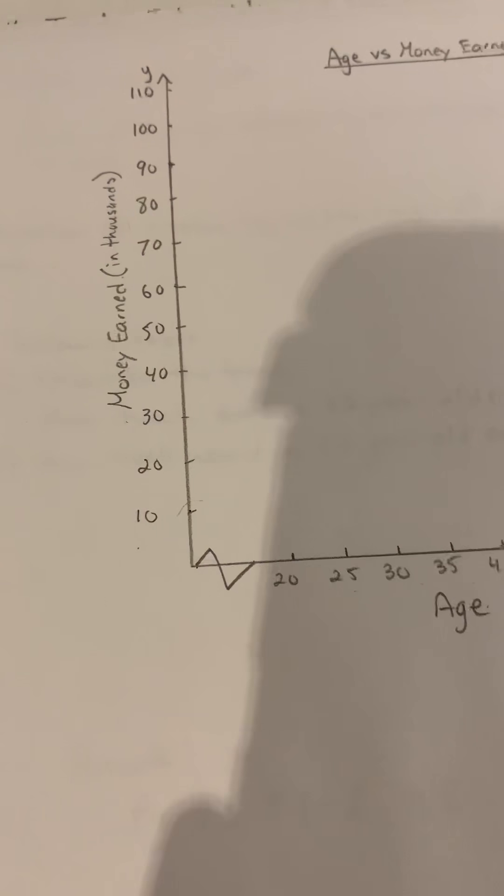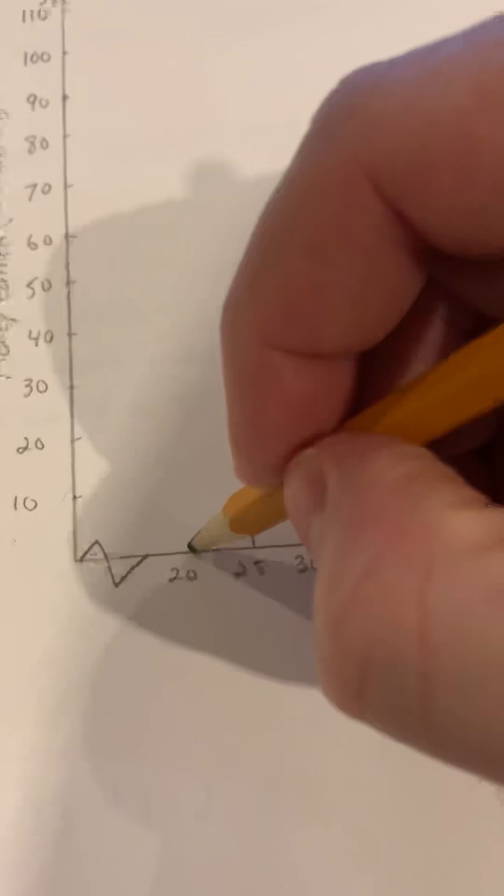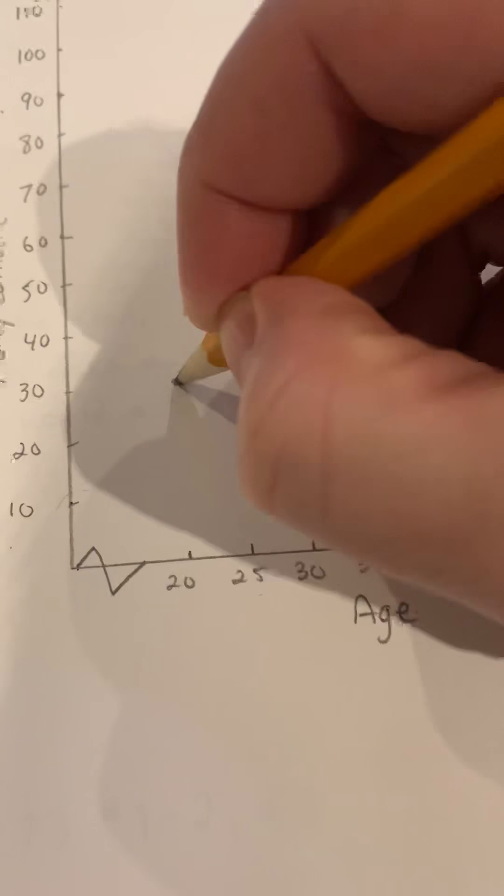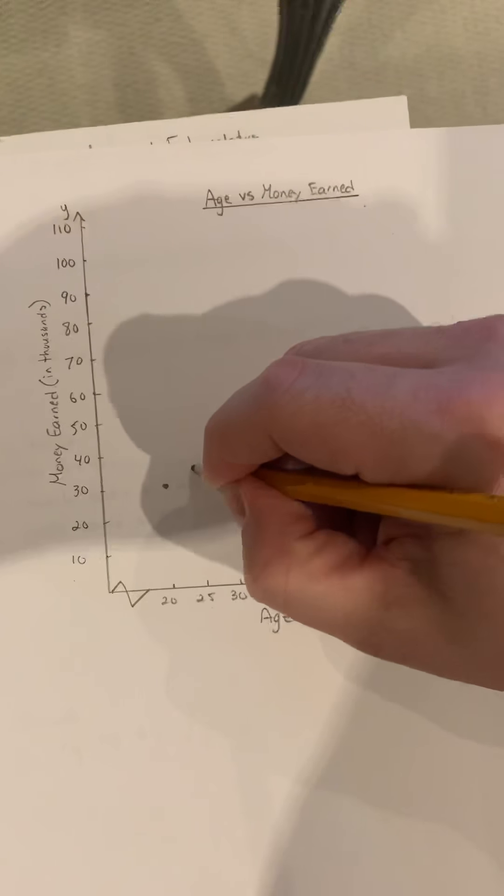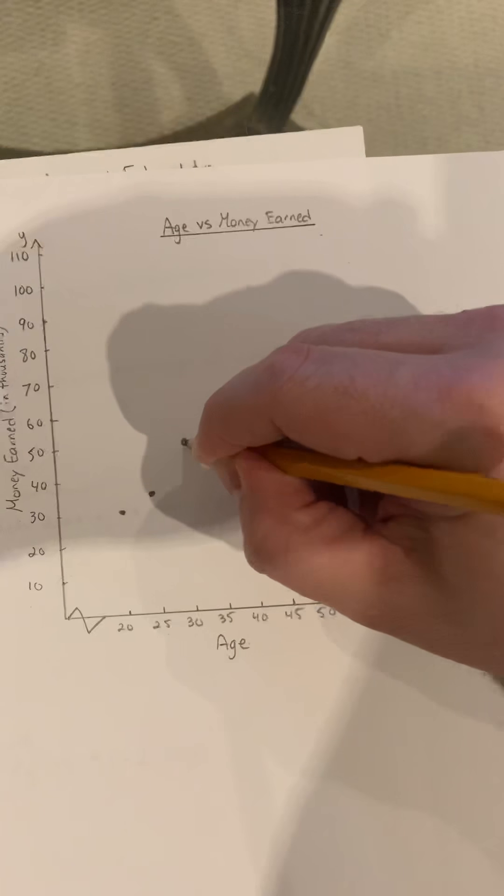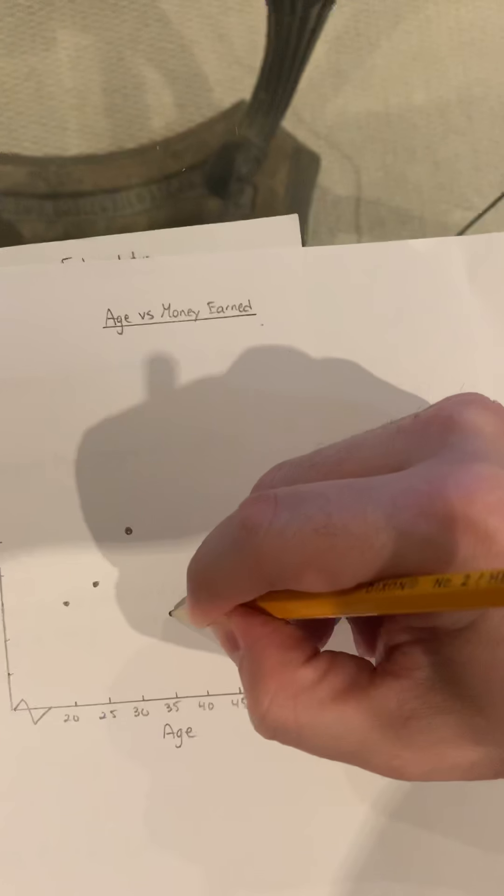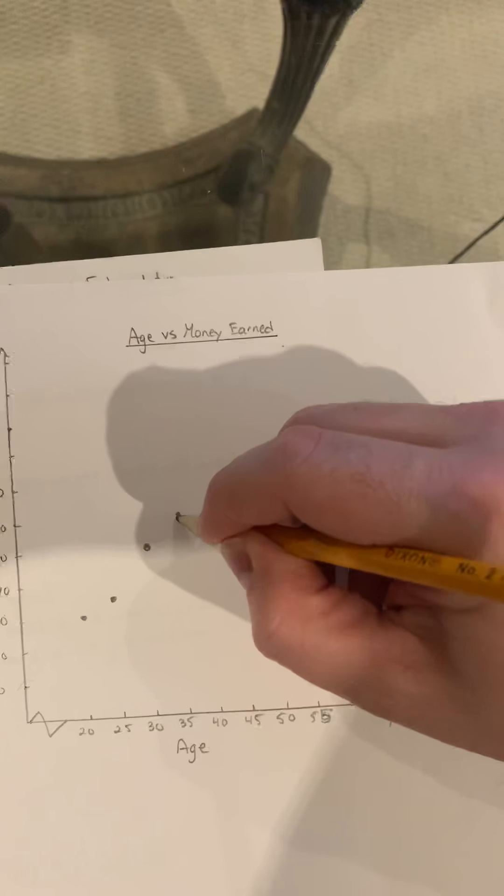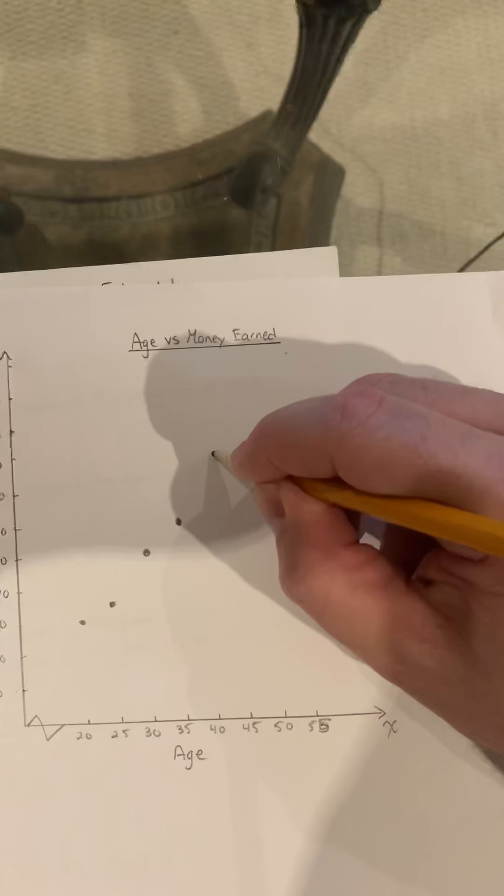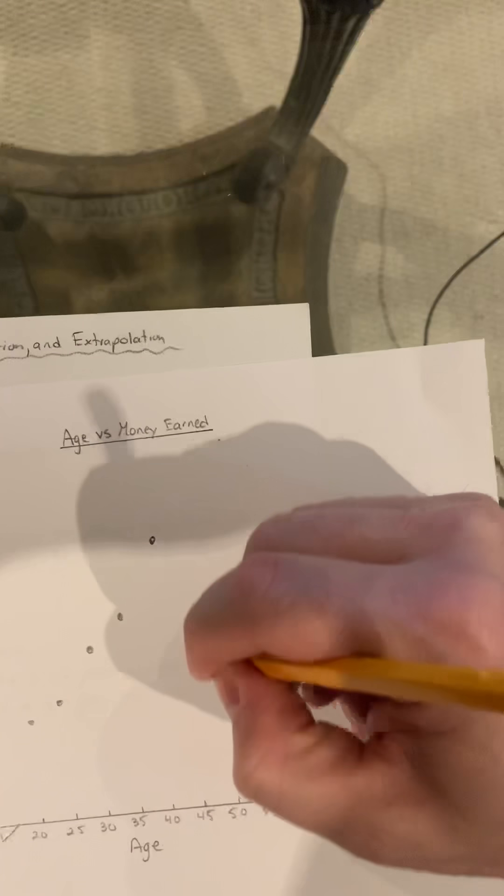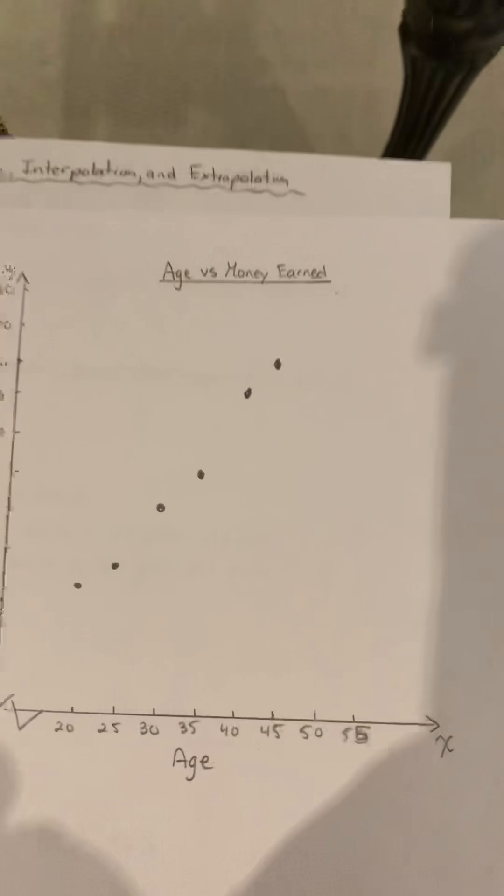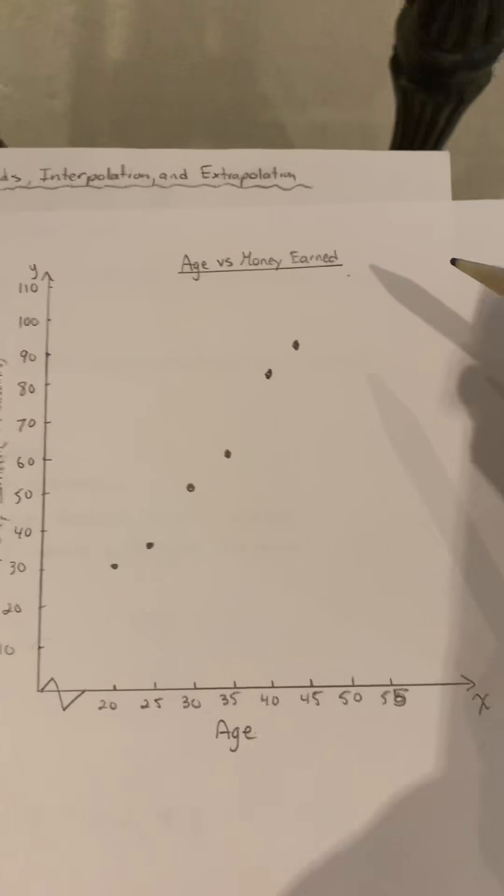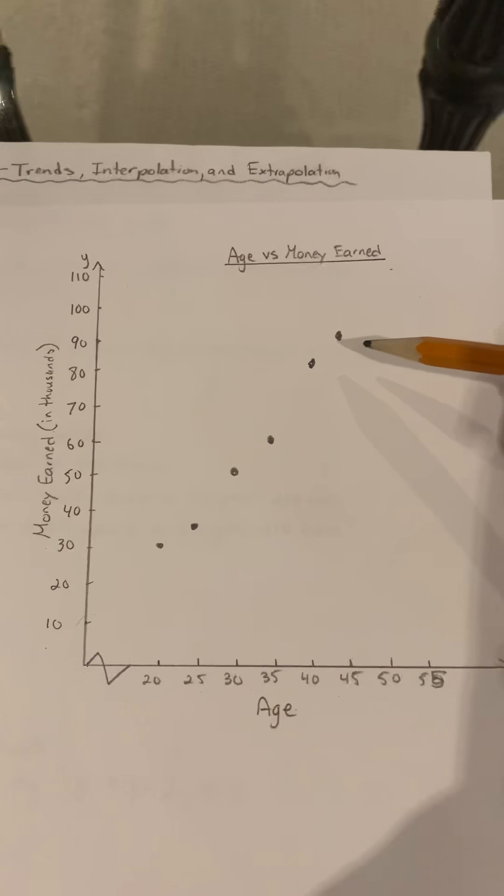Now we're going to start plotting the points. First one is the age of 20 and 30,000. Then we have 25 and 35,000. 30 and 50,000. 35 and 60,000. 40 and 80,000, and 45 and 90,000. I have my six points there from the graph.